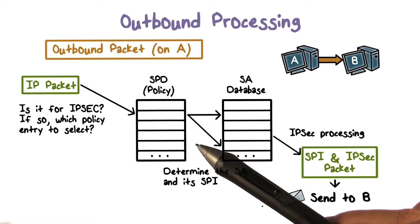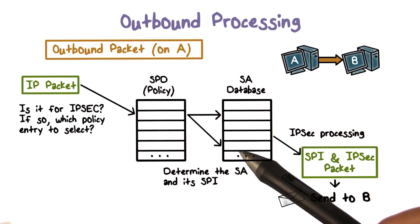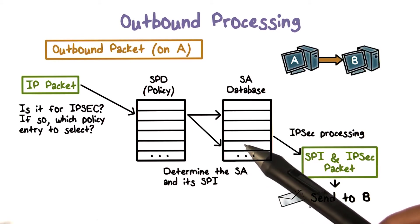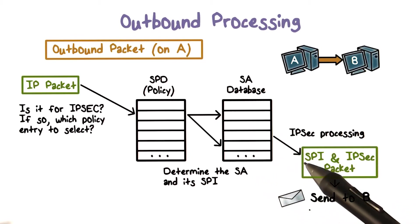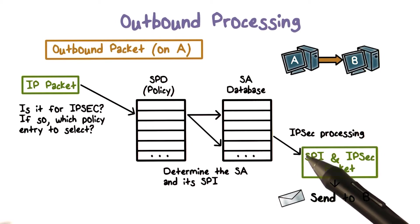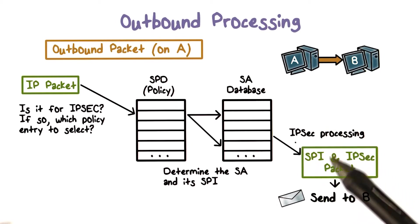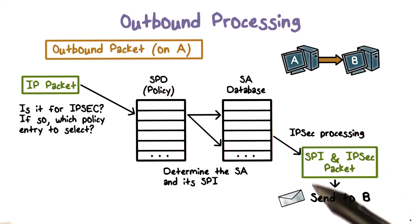If there's an SPD entry, then the SA is looked up in the SADB. The packet is processed accordingly, and the SPI is inserted in the IPSec header.